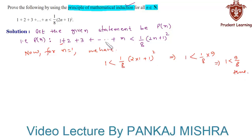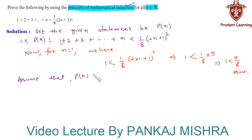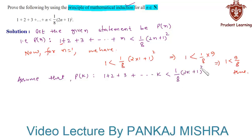In our next step, we assume that P(k) is true for some positive integer k. That is, we assume 1 plus 2 plus 3 all the way up to k is less than one-eighth of (2k+1) whole square. Let us call this relation 1.